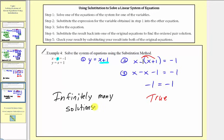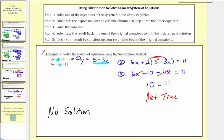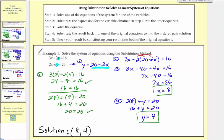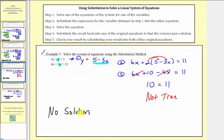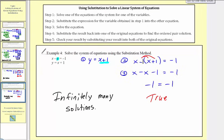So in this lesson, we saw all three types of systems of linear equations: it's possible to have one solution, like examples one and two; it's possible to have no solution, like example three; and it's also possible to have infinitely many solutions, like example four. I hope you found this helpful.